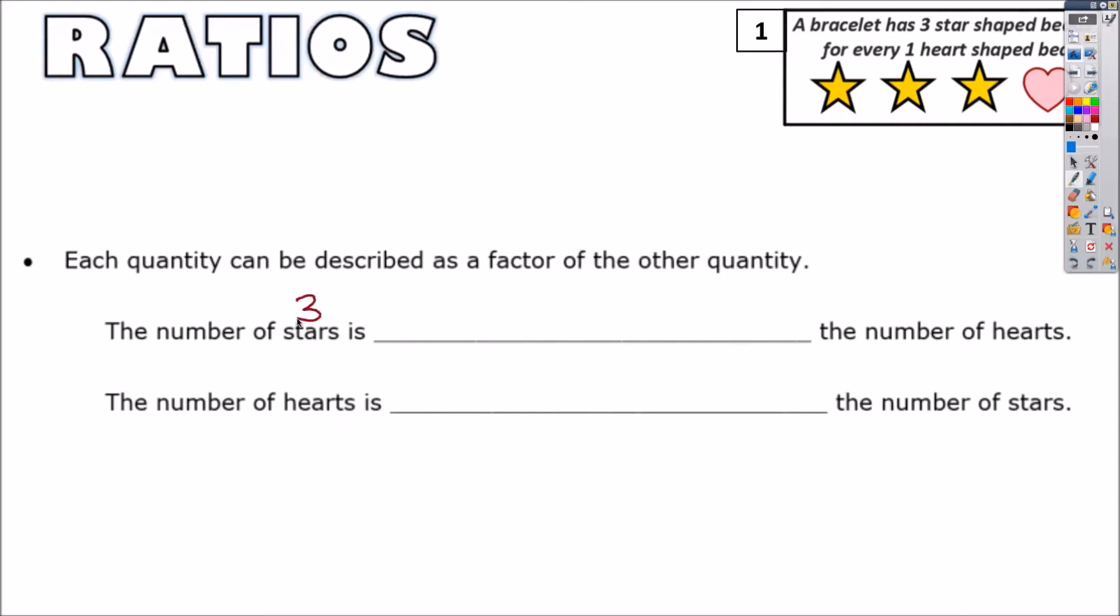So it says the number of stars, three, is blank, the number of hearts, one. After you've written it, I actually want you to write the fraction at the end. So the fraction would be three over one, which is really just three. So now you're going to put this in words. It would be three times. And now if you actually read it, it makes sense. The number of stars is three times the number of hearts. That is correct. Now let's do the second one. The number of hearts, one, is blank, the number of stars, three. And create your fraction, one-third. And that's actually what you're going to write. The number of hearts is one-third the number of stars.